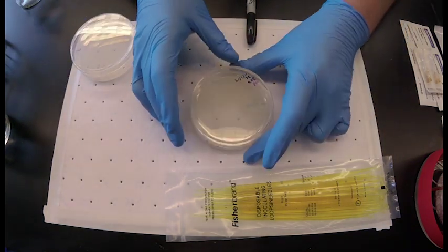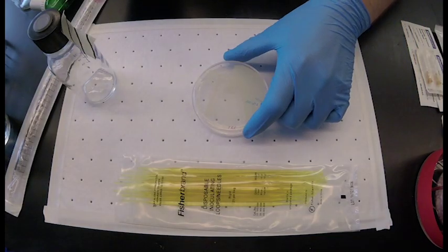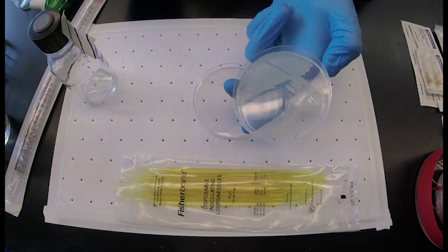Methanotrophs can be grown in large quantities in liquid culture started from a solid plate. You'll need sterilized glassware.